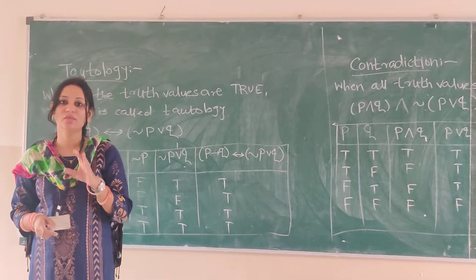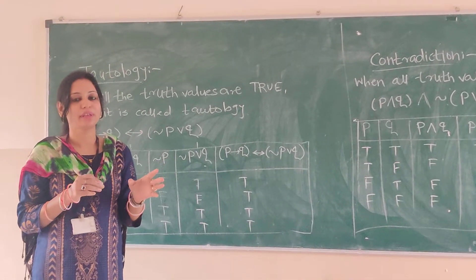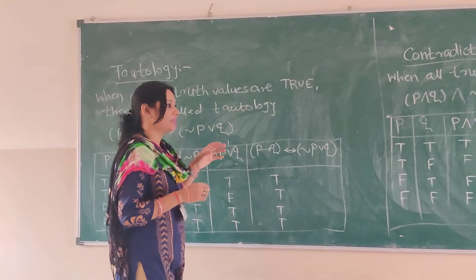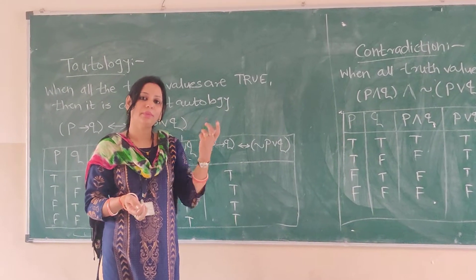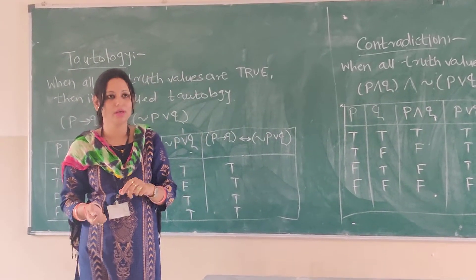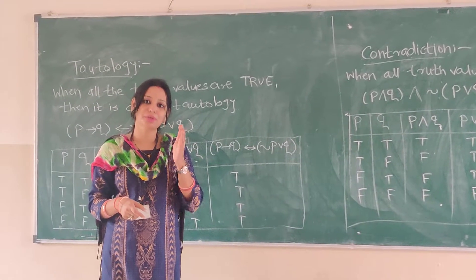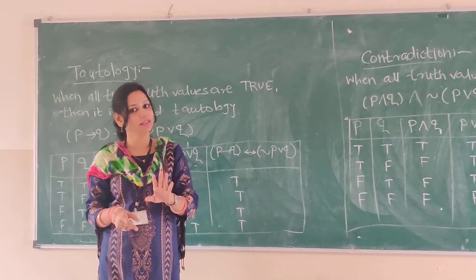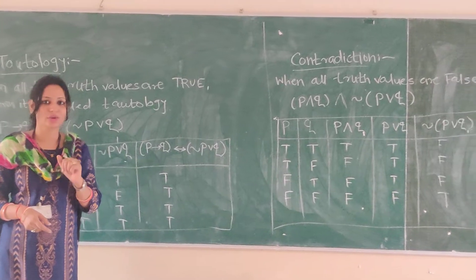In this section we will see the concept of tautology and contradiction. In our last section we have seen how truth tables can be solved. The last column gives us the output of the particular proposition, which contains the truth value of that proposition. Whenever the last column contains all truth values true, it is called tautology, and when all the truth values are false, it is called contradiction.